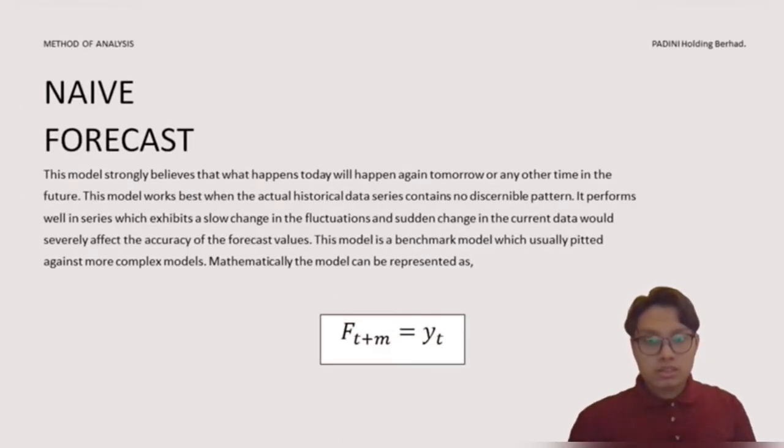For the first one is naive forecast. This model strongly believes that what happens today will happen again tomorrow or any other time in the future. This model works best when the actual historical data series contains no desirable pattern. It performs well in series with slow change in the fluctuations, and sudden change in the current data would swiftly affect the accuracy of the forecast values. This model is a benchmark model which usually pitted against more complex models. Mathematically, the model can be represented as FT+M = YT.